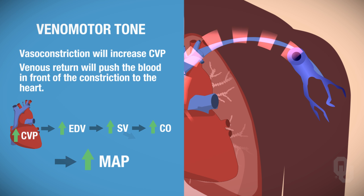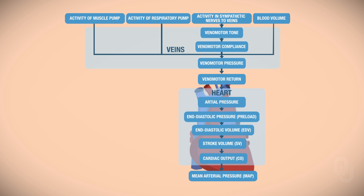And what happens to end systolic volume? It goes down. Here's a summary of all the factors we just discussed and how they can affect central venous pressure. Remember, if central venous pressure is altered, this will ultimately alter the mean arterial pressure.